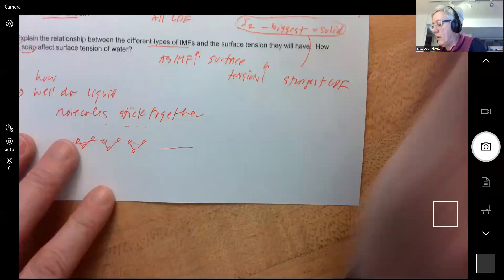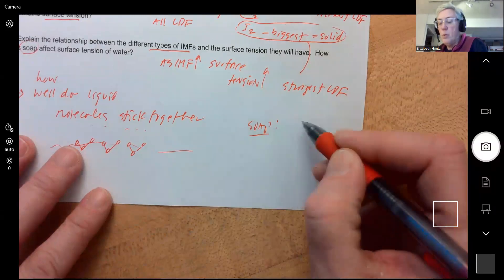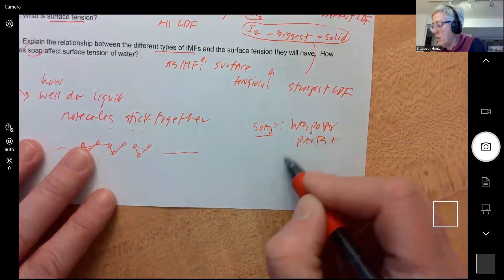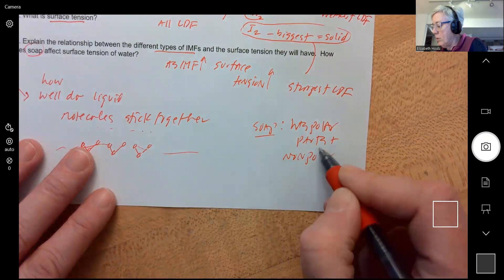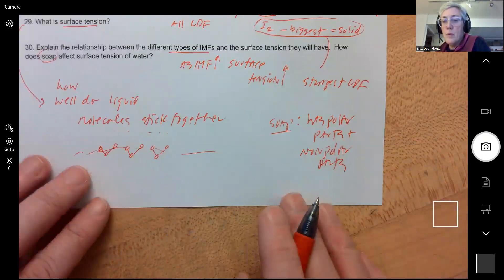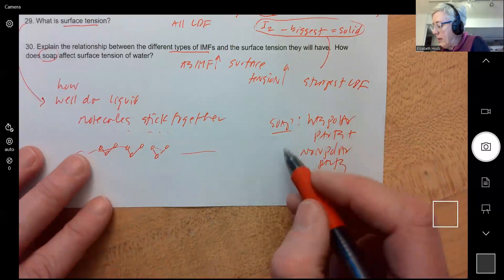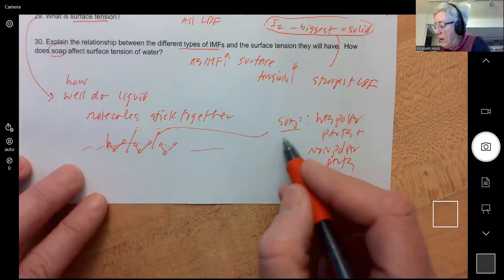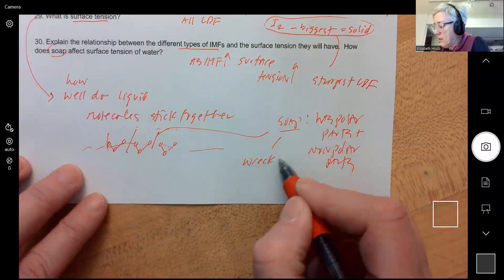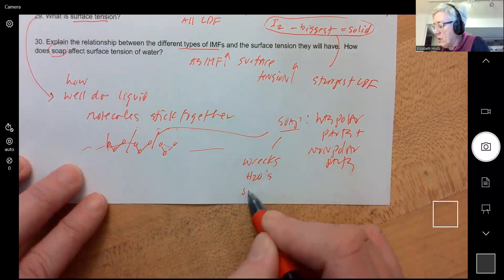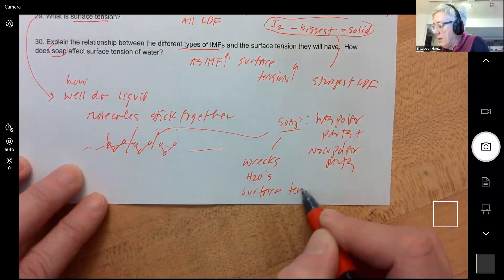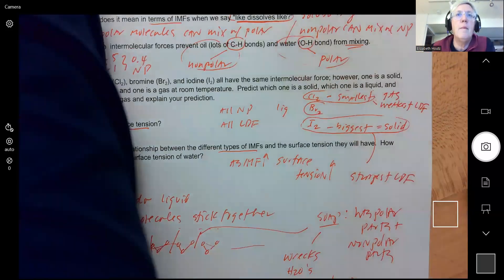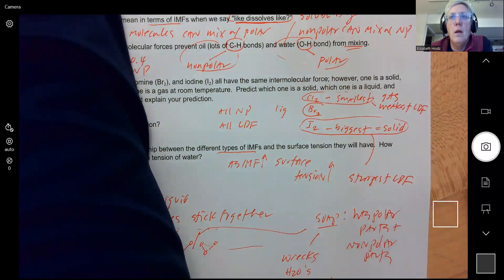How does soap affect the surface tension? Soap has polar parts and non-polar parts, so it disrupts the surface tension of the water. So it breaks up, it gets in between these water molecules and busts them up. So soap wrecks water surface tension by disrupting the hydrogen bonding between the water molecules. All right, I hope this helps. Let me know when you're done with it and we'll set up your test retake.